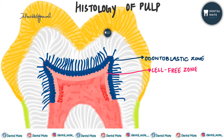The significance of the cell-free zone is that it is utilized by odontoblastic cells to move towards the pulp during dentine formation. After the cell-free zone is the cell-rich zone, also known as the zone of Rangio. It is three to four cell layers thick.